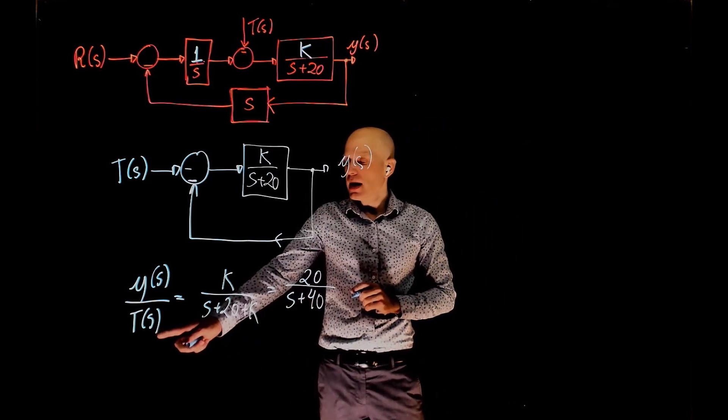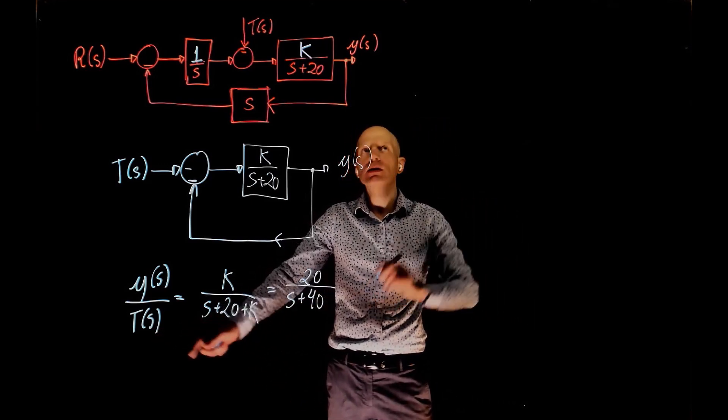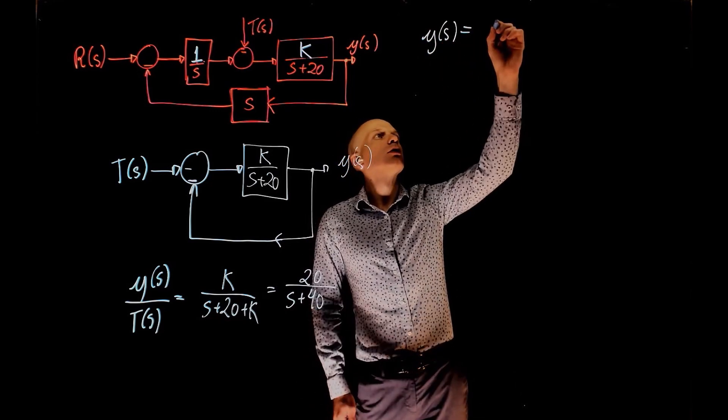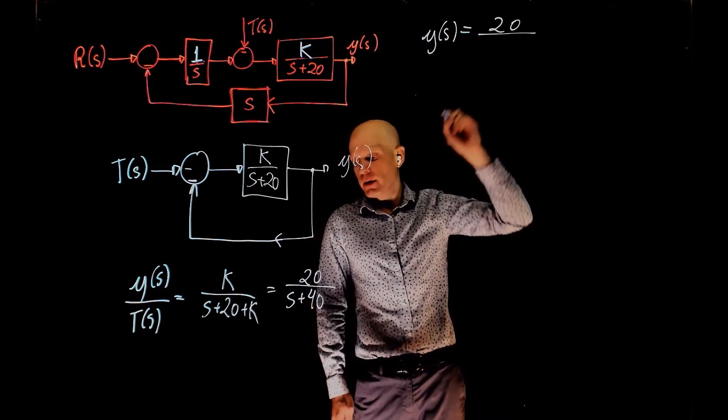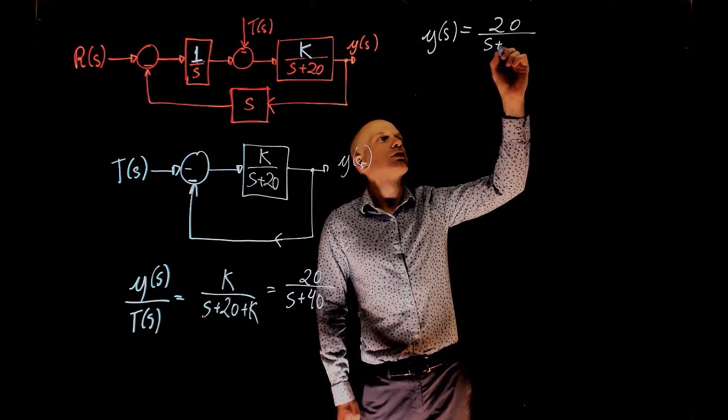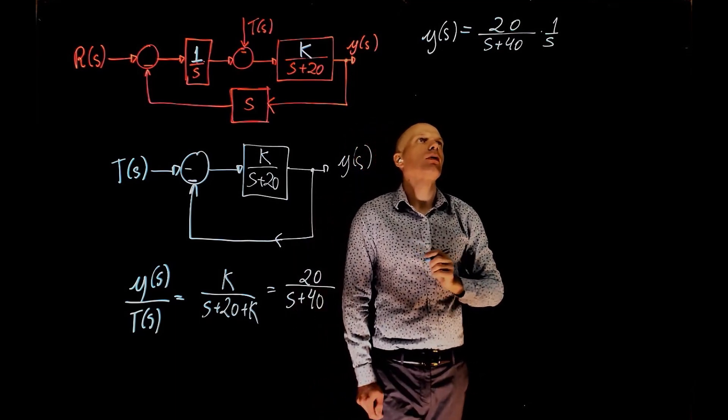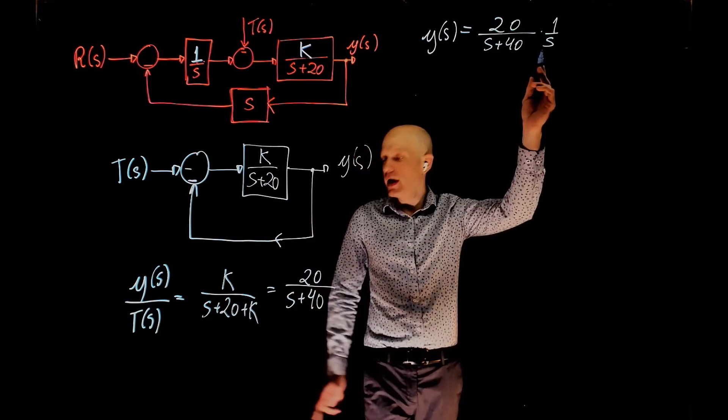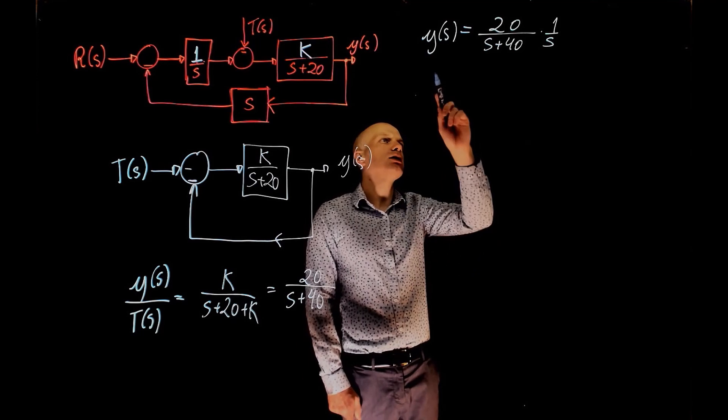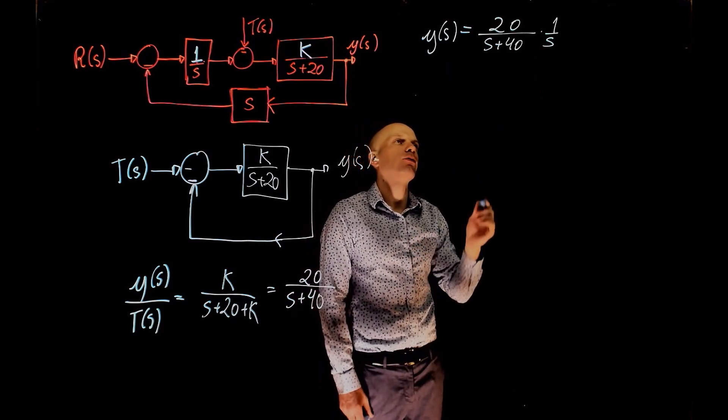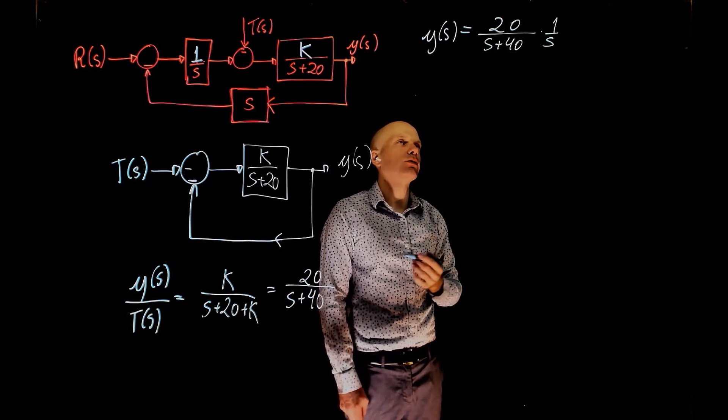We are considering a step input to T(s). So y(s) now is 20 divided by (s + 40) times 1 over s. And 1 over s is T(s). Now this does not fall into the category of equations that I developed before for a standard second order transfer function.